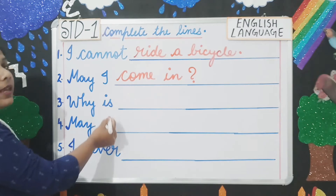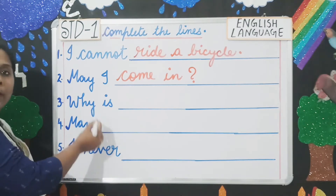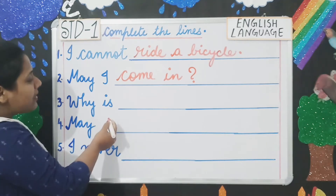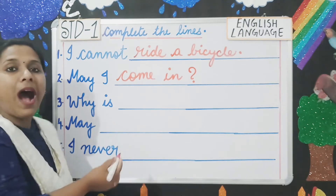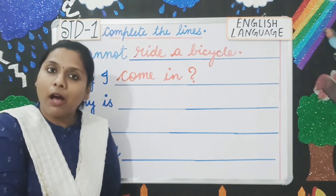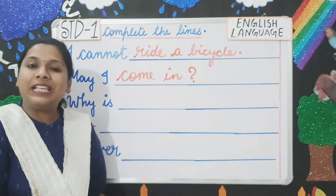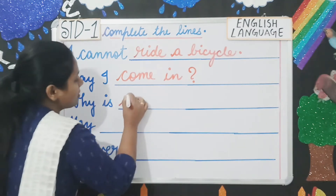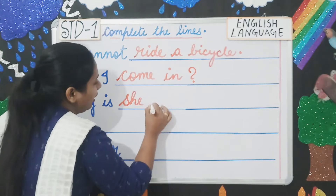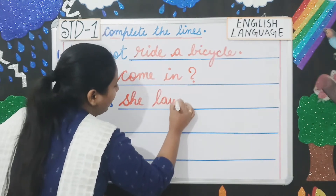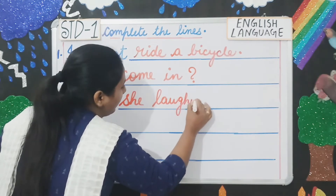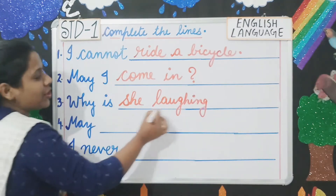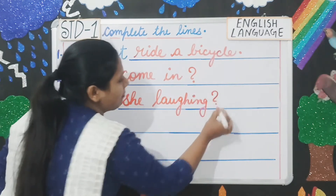Next is 'Why is.' This is also a question because it begins with 'why.' You can write 'Why is she laughing?' or 'Why is Seema crying?' Since it is a question, you will put a question mark.